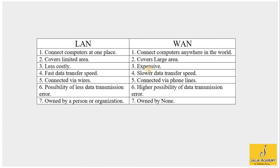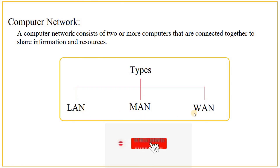Local area network is less costly, whereas wide area network is more expensive. LAN provides fast data transfer speed, but WAN provides slower data transfer speed. Computers in LAN are connected through wires, whereas devices in WAN use telephone lines. LAN has less possibility of data transmission errors, but WAN has a higher possibility of transmission errors. Finally, LAN is always owned by a person or an organization, but WAN is owned by no one — neither a person nor an organization. These were the different types of computer network.